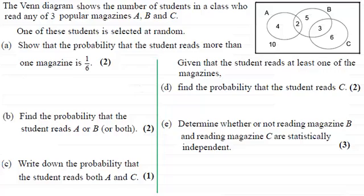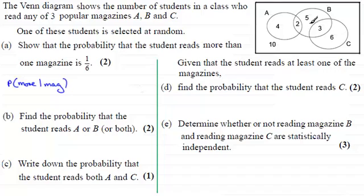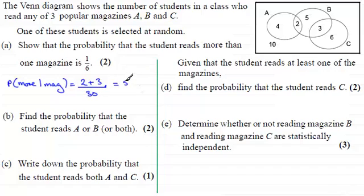The probability of reading more than one magazine: how many people read more than one magazine? There are two here who read magazines A and B, and three here who read magazines B and C. So that's two plus three. The total number of students is ten plus four plus two plus five plus three plus six, which comes to a total of thirty. So we've got five out of thirty, which reduces down to one sixth.